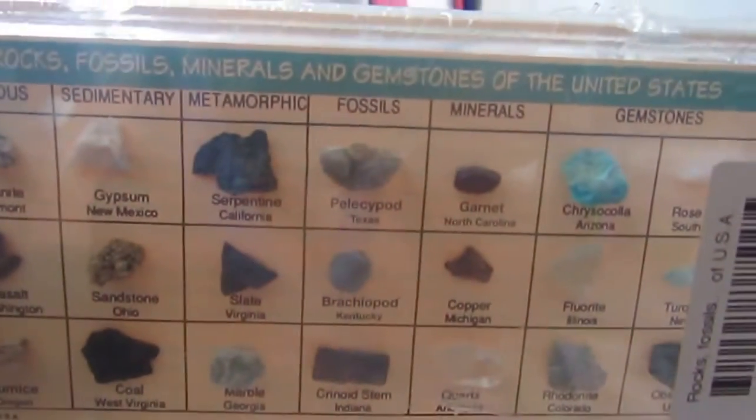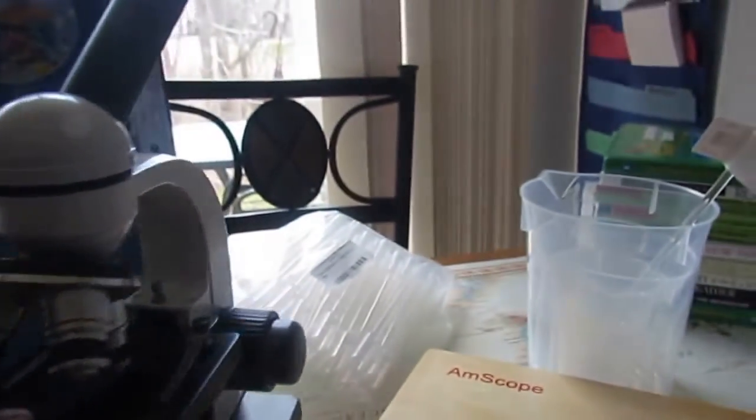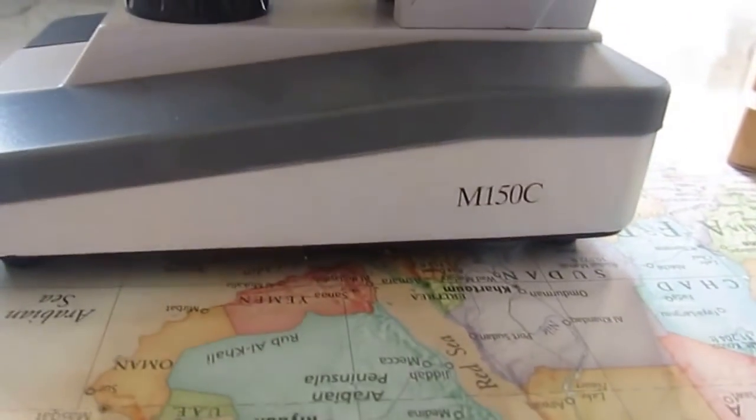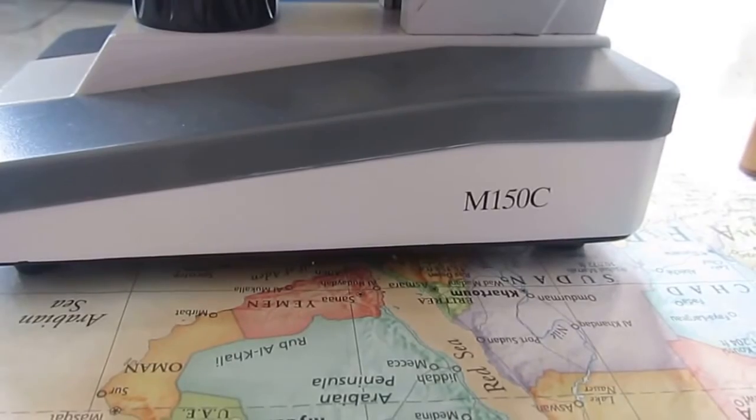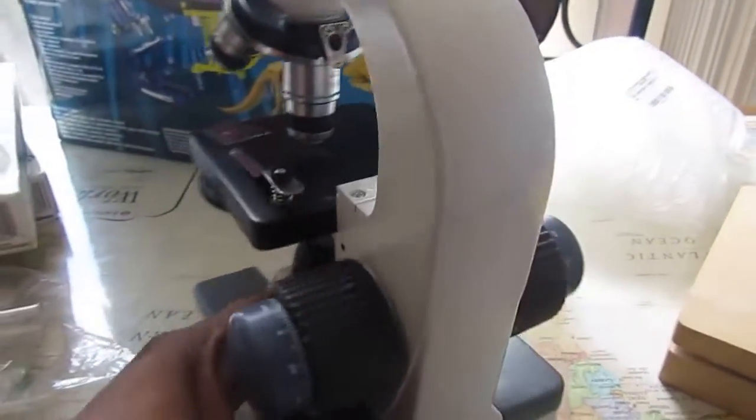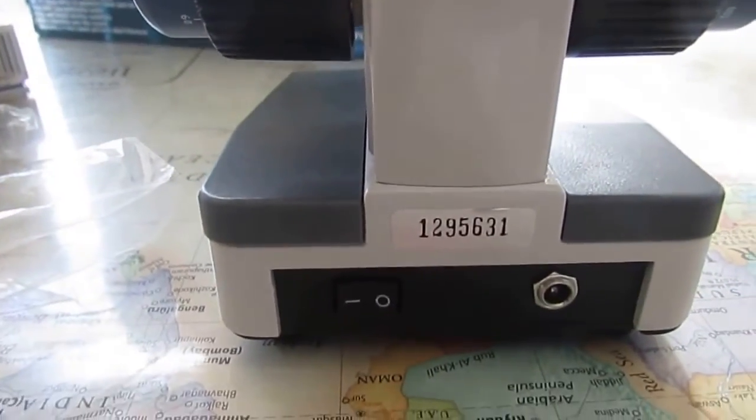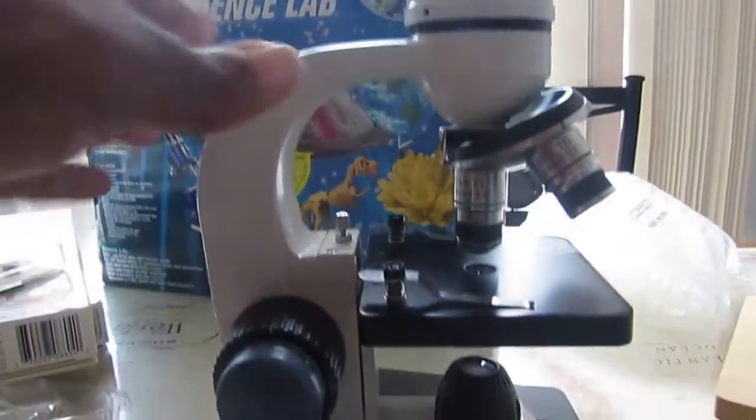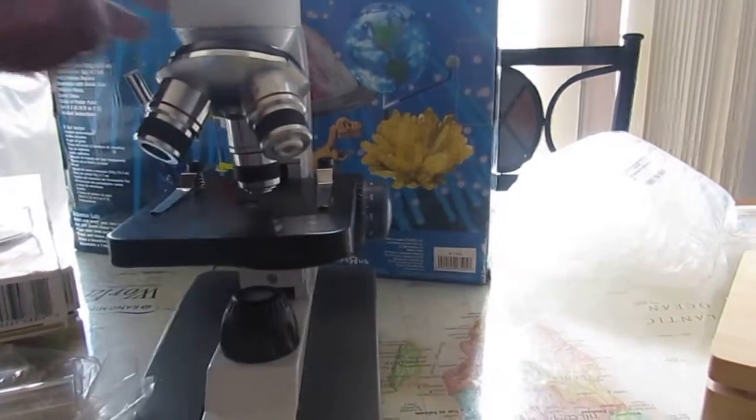I also have this rocks and minerals little set. Now I'm going to pull the microscope over a little more if you can see it. So this version, I guess, is the M150C. I like it. Works great for our family.